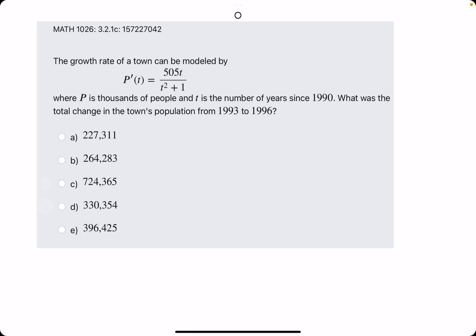Okie dokie. In this problem, they give us a growth rate of a town's population. P, the antiderivative of P', is the population in thousands of people. And very important, T is the number of years since 1990.